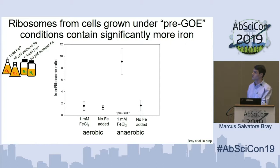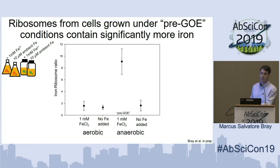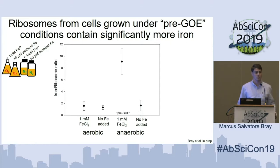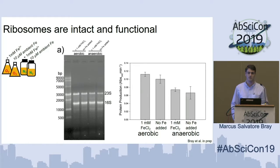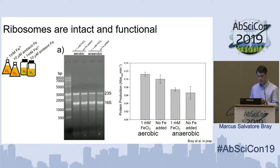That iron-per-ribosome ratio is shown on the Y-axis, and on the X-axis we have our four growth conditions — our two aerobic conditions and then our two anaerobic conditions, with our pre-GOE anaerobic one millimolar ferrous chloride condition. What we can see is that indeed, in the pre-GOE conditions, we have significantly more iron associated with those ribosomes compared to the other growth conditions — about ten versus about one for the other three. When we looked at the ribosomal RNAs, regardless of growth condition, the 23S or the 16S ribosomal RNAs are intact, and therefore these ribosomes are also functional in vitro translation assays regardless of iron content or growth condition.